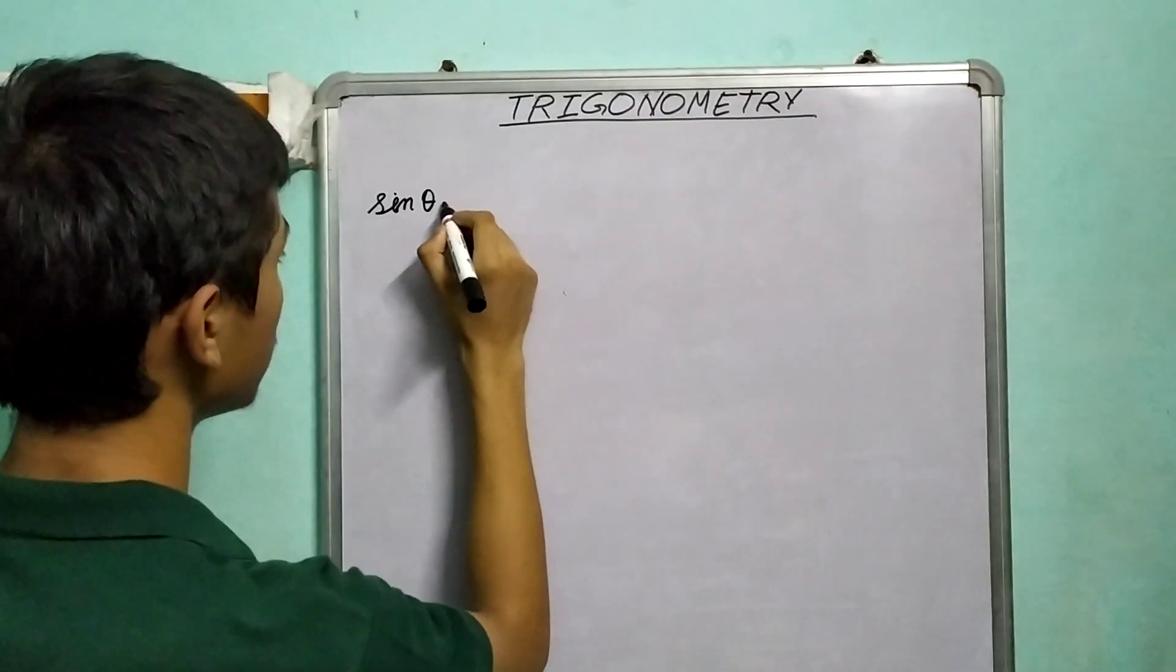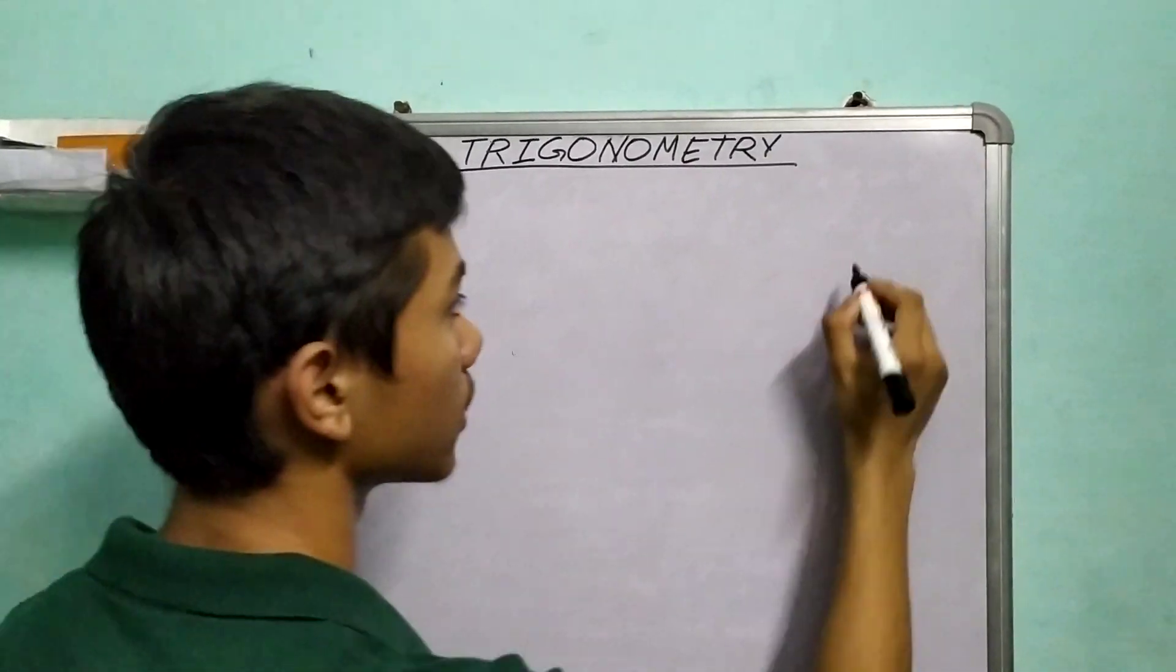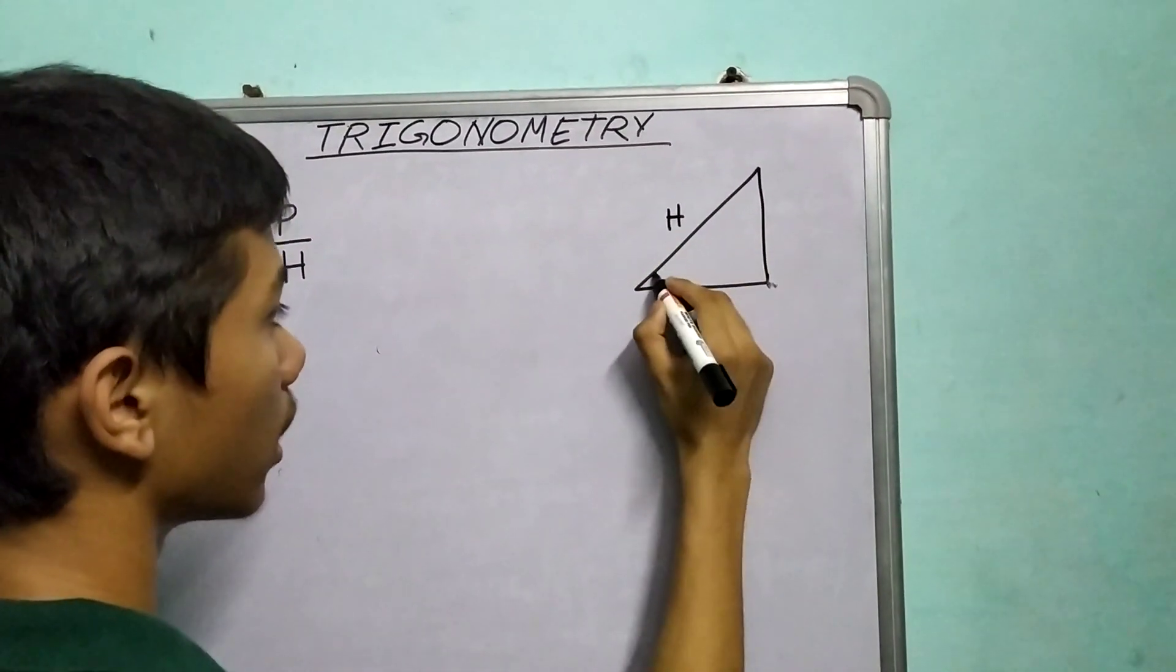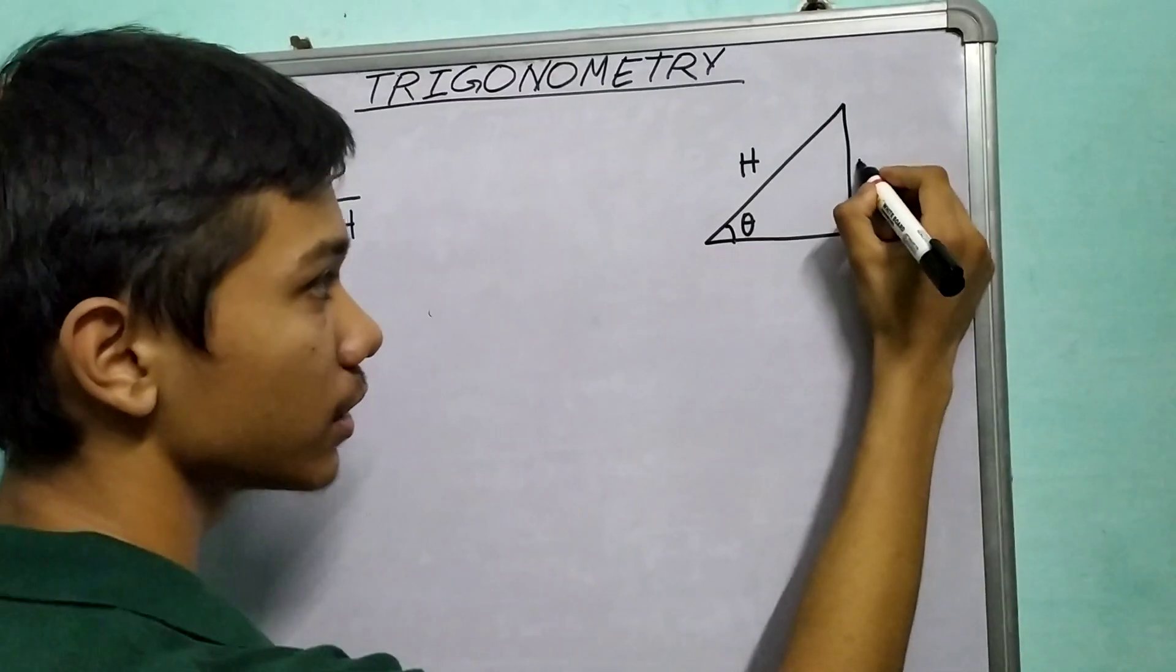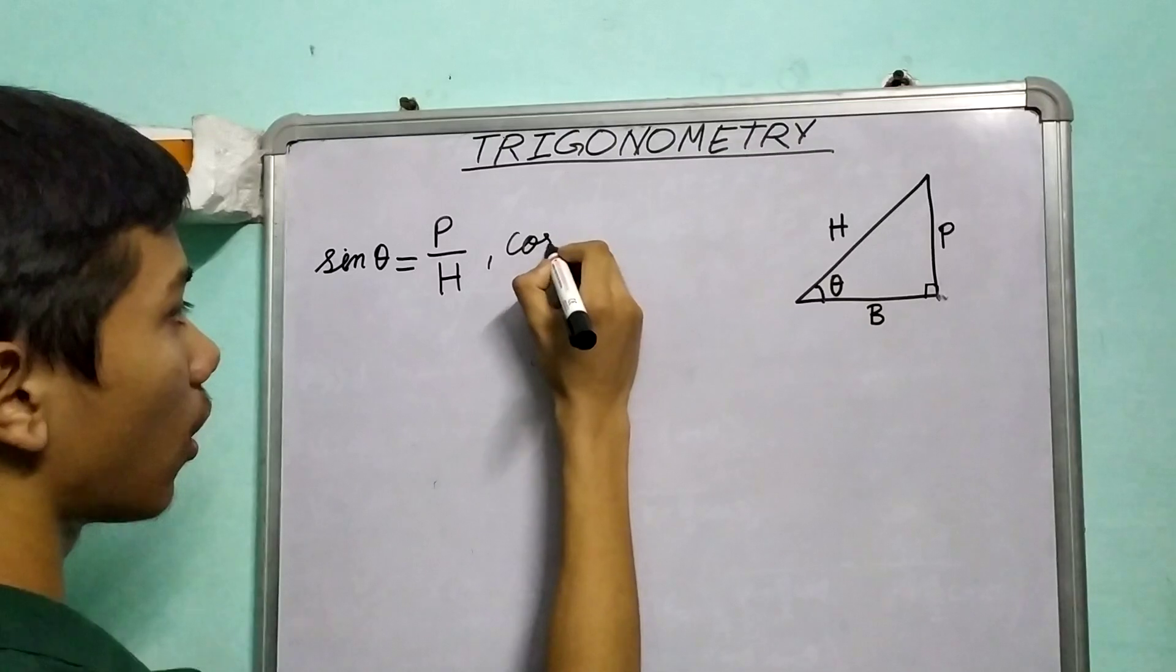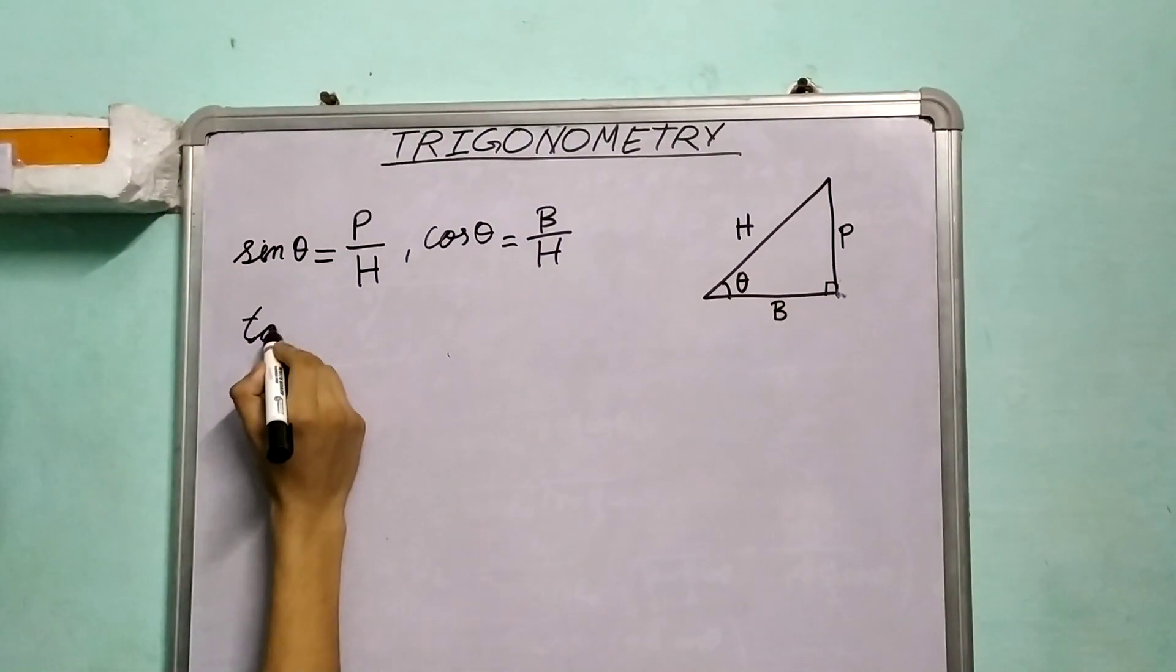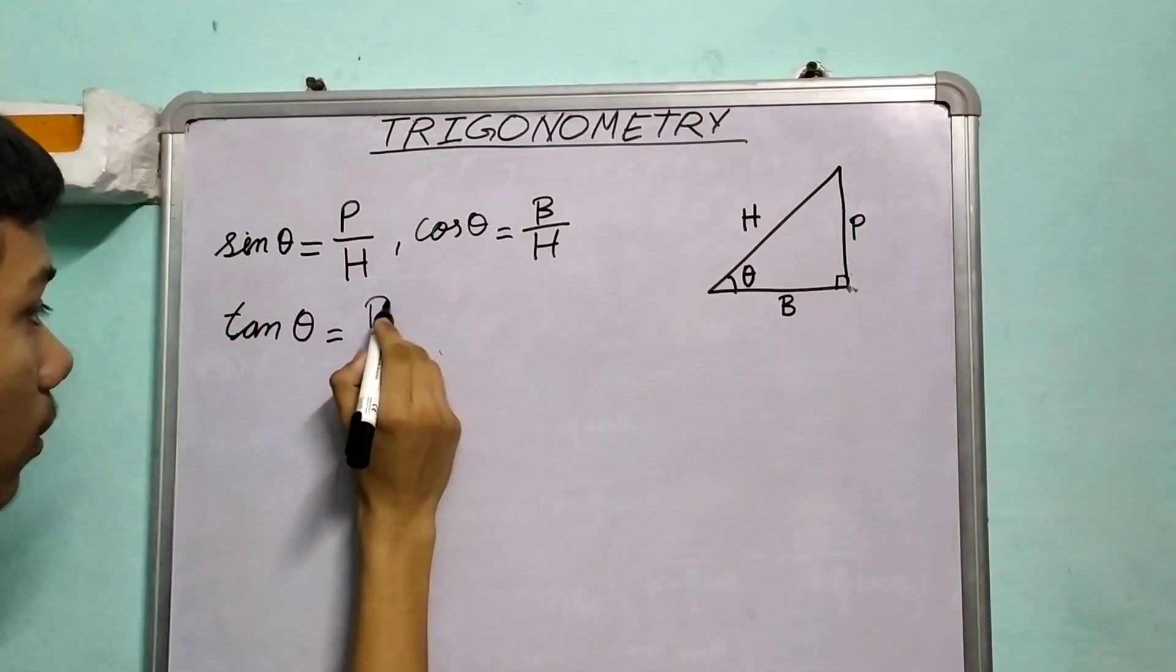Sine theta is our perpendicular upon hypotenuse. Now remember, if we look from theta's point of view, this will be our perpendicular side, so this is P and this is B. Cos theta is B upon H, tan theta is P upon B, perpendicular upon base.